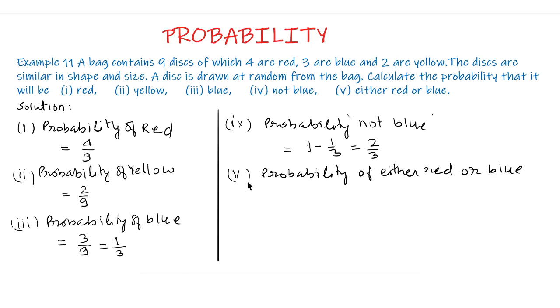Part 5, probability of either red or blue. As we see that the total number of red disks are 4 and there are 3 blue disks, so the total number of favorable disks are 4 plus 3 which is 7. So the probability of either red or blue is 7 upon 9.